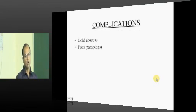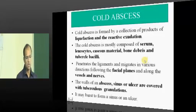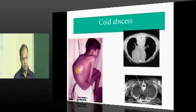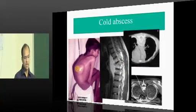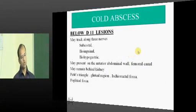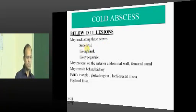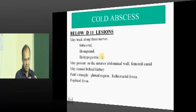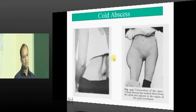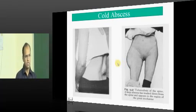The two most important complications are cold abscess and neurological damage. Cold abscess is a liquefaction and reactive exudation — lots of pus, debris, leukocytes, and tuberculosis bacilli. They take the path of least resistance and can present at any site: anteriorly, posteriorly, as a bird's nest abscess, as a psoas abscess, at the subcostal margin, along the ilioinguinal nerve, or the lateral and posterior aspect of the thigh — wherever it finds a path, it will travel and present there.